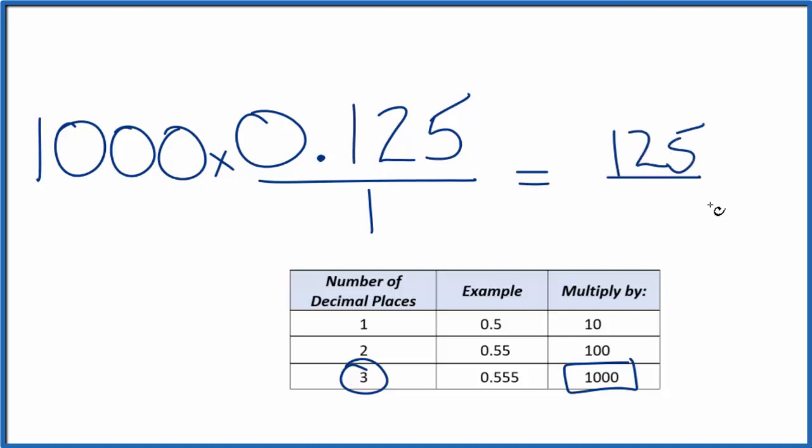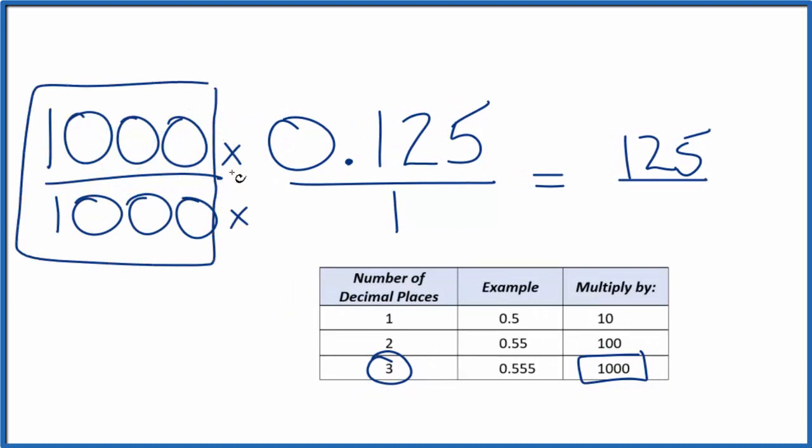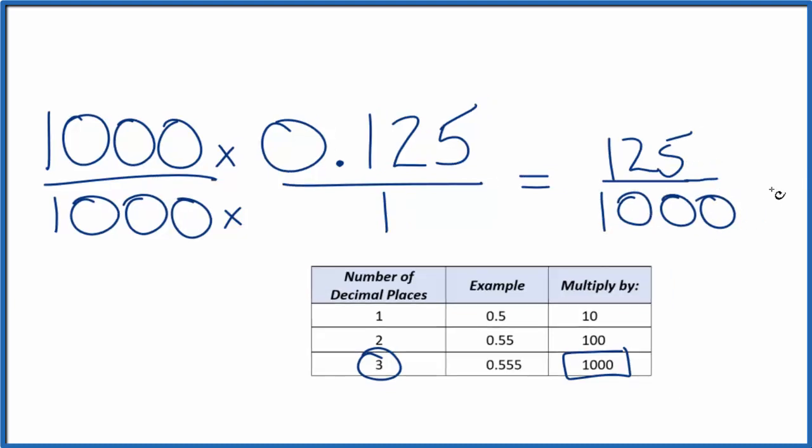So now I have a whole number, but 125, that's not the same thing. It's not equal to 0.125. So what I need to do is also multiply the bottom by 1,000. So 1,000 over 1,000, that's just 1. I'm just multiplying by 1, I'm not changing the value, just the way we represent it. So 1,000 times 1 gives us 1,000. But now I have 125 over 1,000, and I can simplify this fraction.